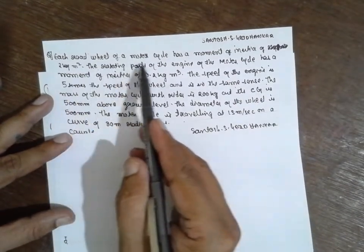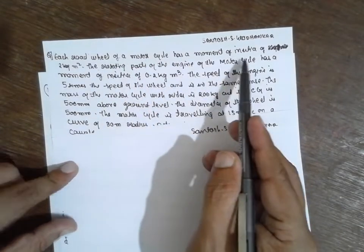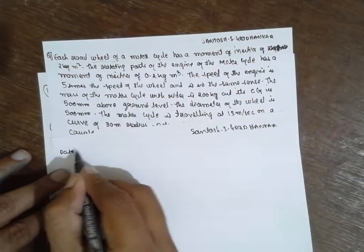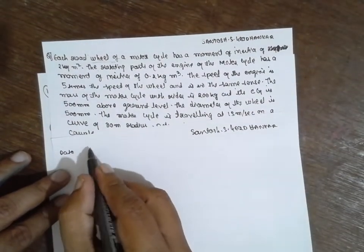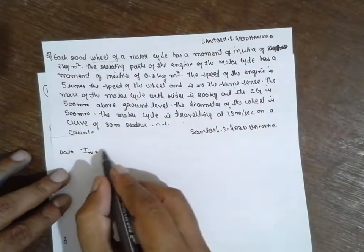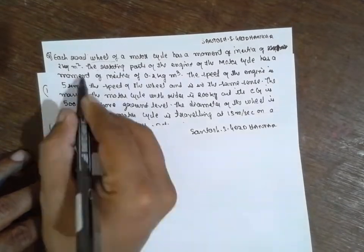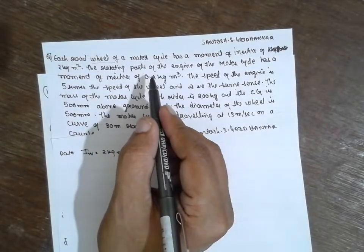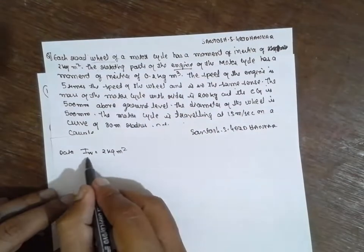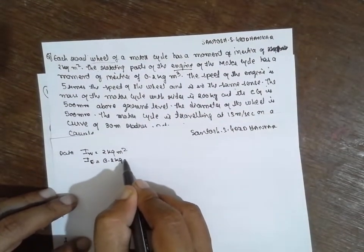Each road wheel of rotor cycle has a moment of inertia. Here wheel is the angle. Therefore data has to be Iw, because it is 2 kg m². The rotating part of the engine has a moment of inertia. Therefore IE is 0.2 kg m².